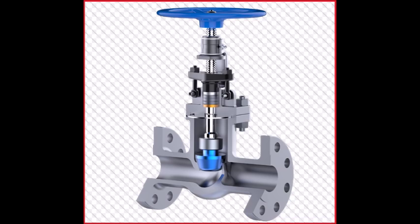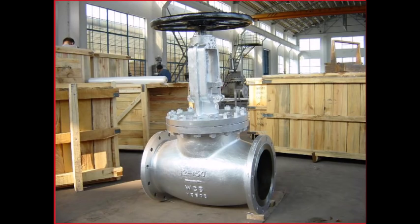Bonnet: The bonnet provides a leak-proof closure for the valve body. The threaded section of the stem goes through a hole with matching threads in the bonnet. Globe valves may have a screw-in, union, or bolted bonnet.